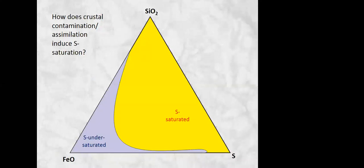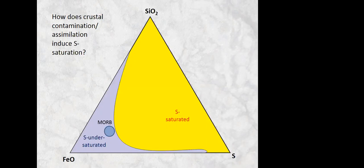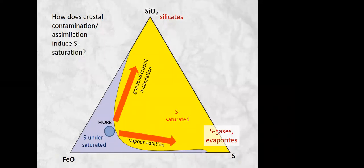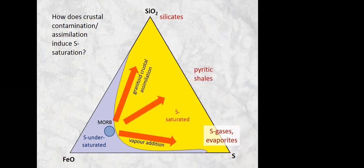Here's a simple plot of iron, silica and sulfur. Normal basaltic type magma plot over here in the field of sulfur undersaturation. And contamination by almost anything - if we contaminate it with siliceous material, with granitoid crustal rocks, we will move into the field of sulfur saturation. If we contaminate them with sulfur-rich evaporites, we will also pull them into the field of sulfur saturation. So there's no problem with crustal contamination driving the formation of immiscible sulfides.